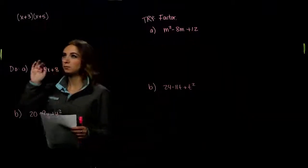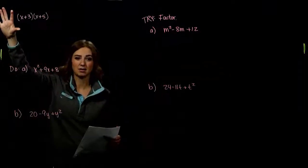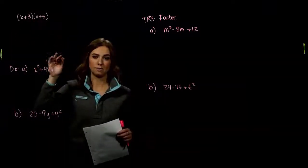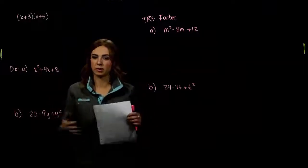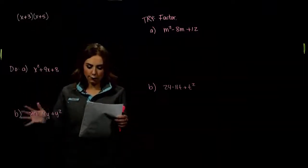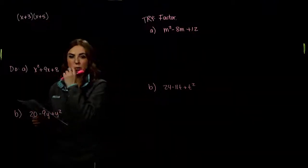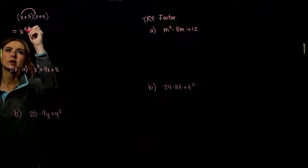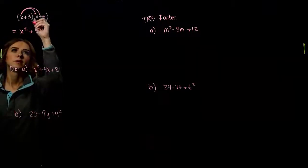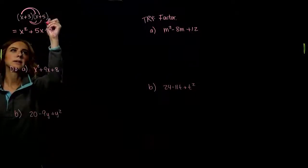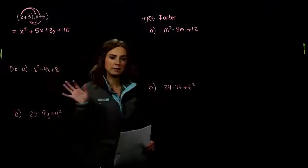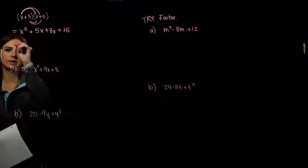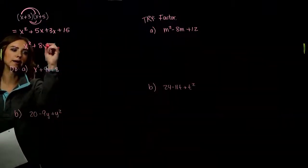To remind you — coming back to our first example — in order to get rid of these parentheses, we have to multiply these together using FOIL. First times first gives us x squared, outer gives us 5x, inner gives us 3x, and last gives us plus 15. So right off the bat when we FOIL, we have four terms, but we can combine like terms in the middle and we're left with a trinomial: x squared plus 8x plus 15.